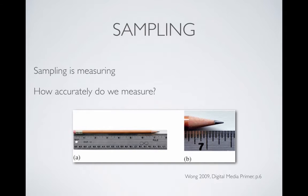So when it comes to sampling, sampling is essentially measuring something. In this case it was the pendulum, but when we're talking about digital audio, we're really sampling the movement of air, or the movement of a microphone membrane which is affected by the movement of air. Sampling is measuring. There are a few questions that arise — one is how often do you sample, which we've just been talking about in relation to that pendulum. But also: how accurately do we measure?